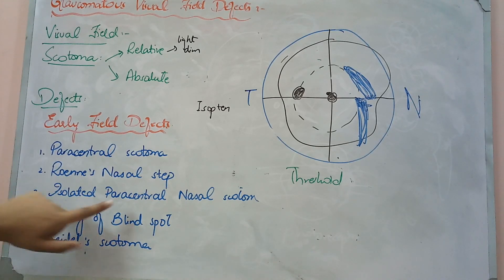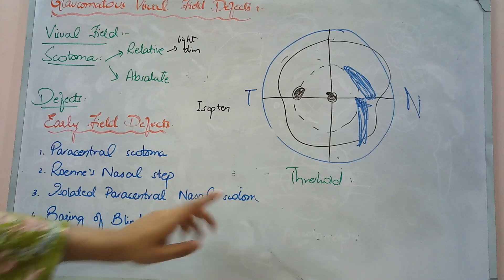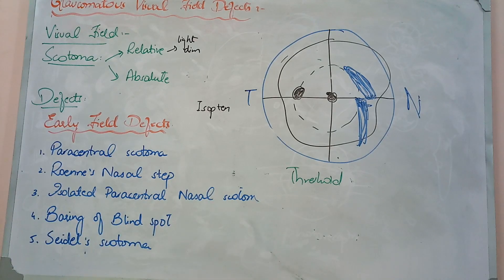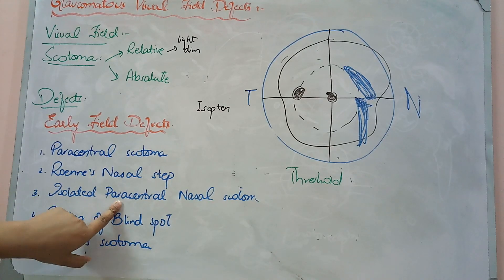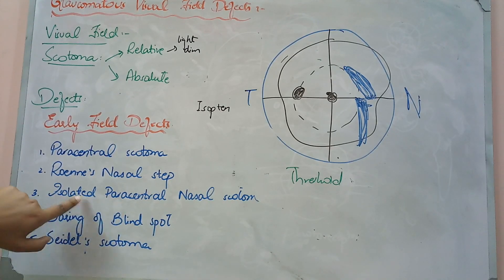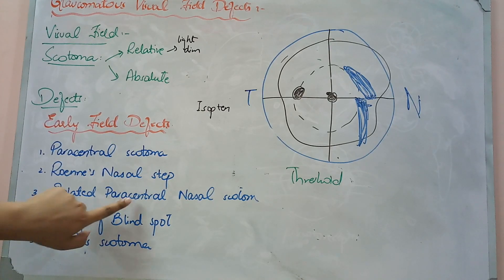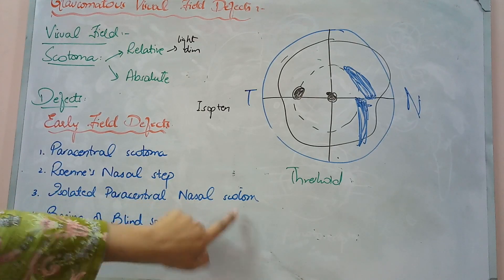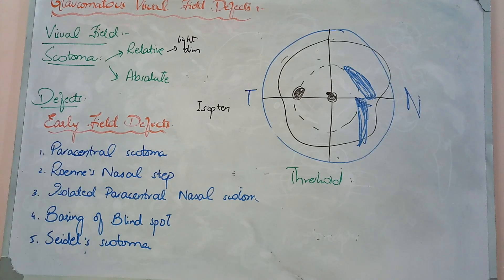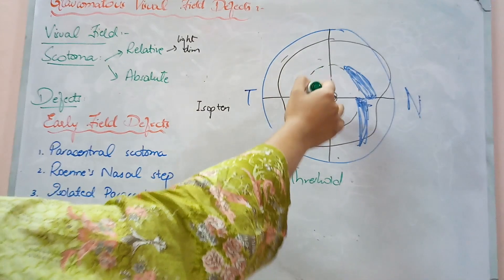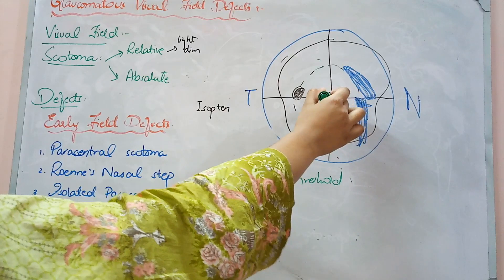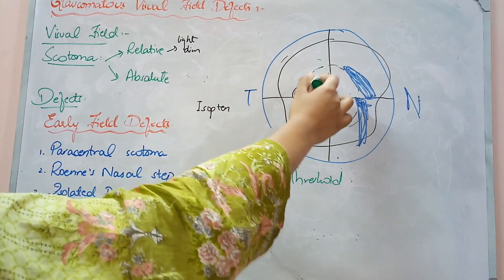The right-hand side is isolated paracentral nasal scotoma. What is paracentral? Isolated means it is a case where it doesn't have to be coalescing or joining. On the nasal side — simply said — in paracentral scotoma, we have a scotoma in the paracentral area, which is within 30 degrees of the fixation point.